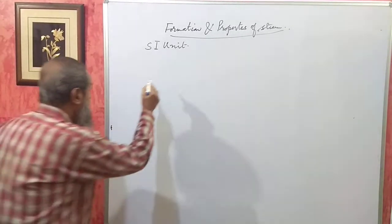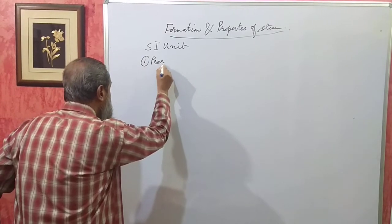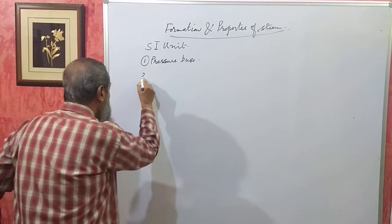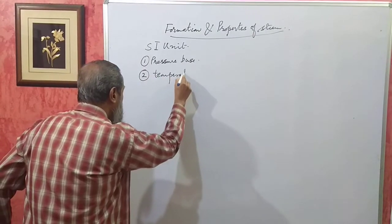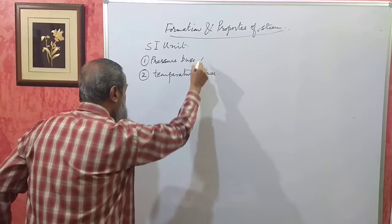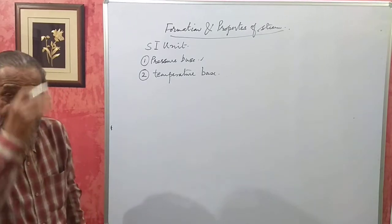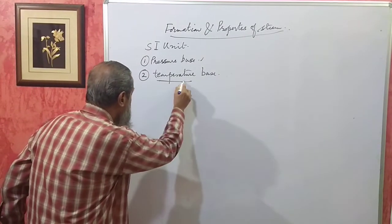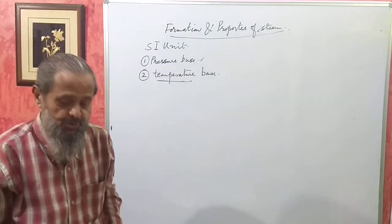In the SI unit steam table, there are two types: one is pressure-based and the other one is temperature-based. Generally, we have to use the pressure-based table. Only if the temperature of steam is given instead of pressure do we use the temperature-based table. Otherwise, it is generally the pressure-based table which will be used.